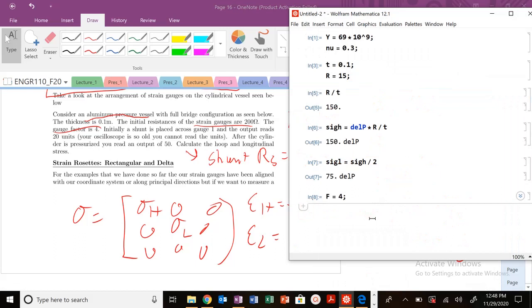Let's go ahead and write that out. The strain gauge, so let's get our R₁ here, is going to be 200. And then our shunt resistor RS is going to be equal to 500,000.